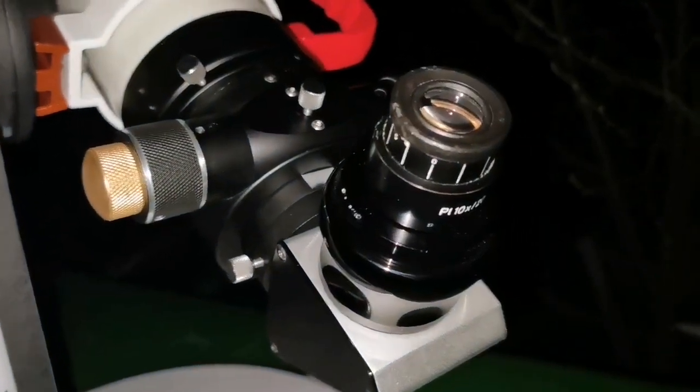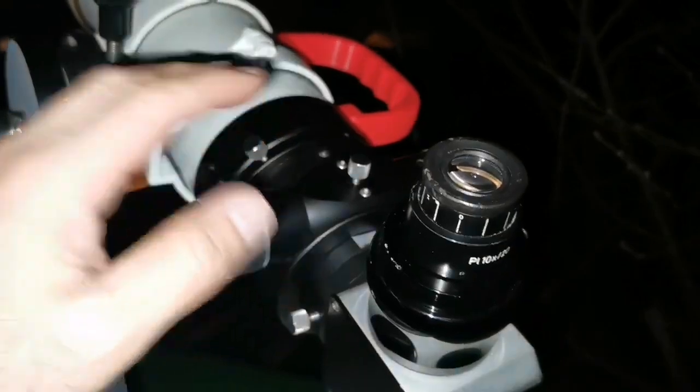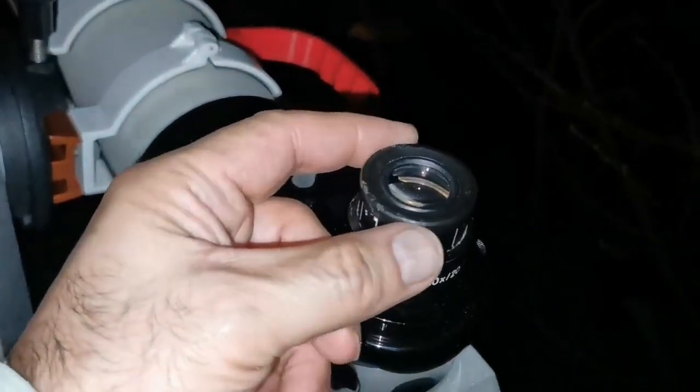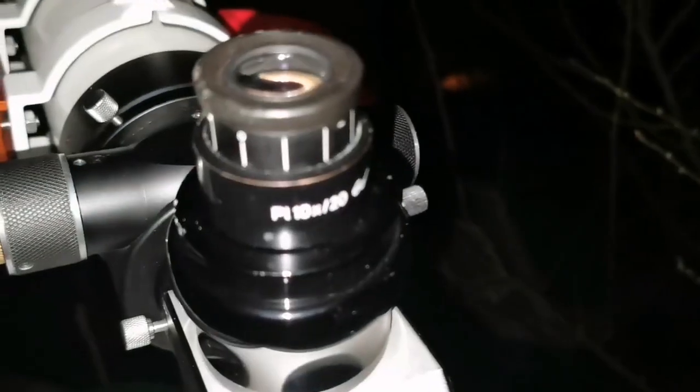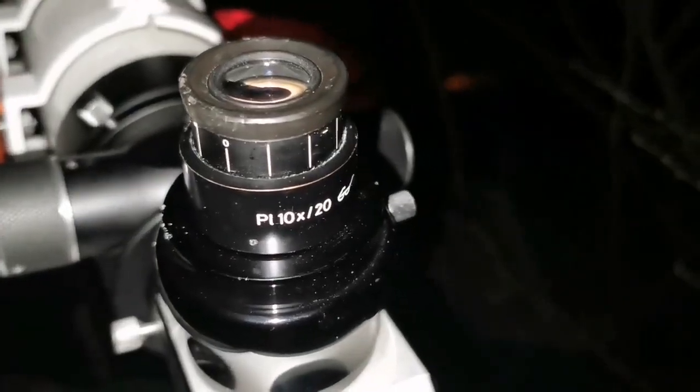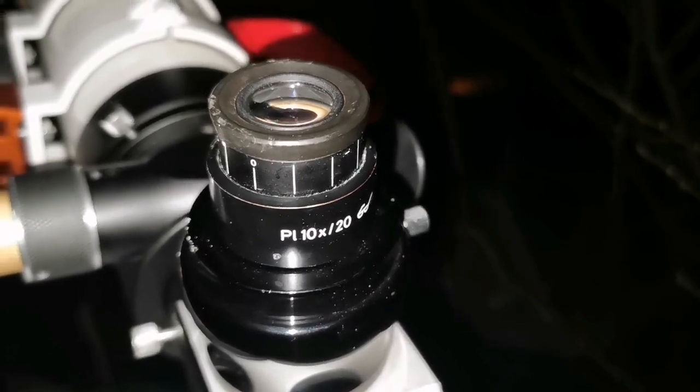I have my best view of the M42 Great Orion Nebula with this telescope and this Zeiss eyepiece, microscope eyepiece. Specification is written here PL 10x20, that is equal to 25mm 57 degrees.